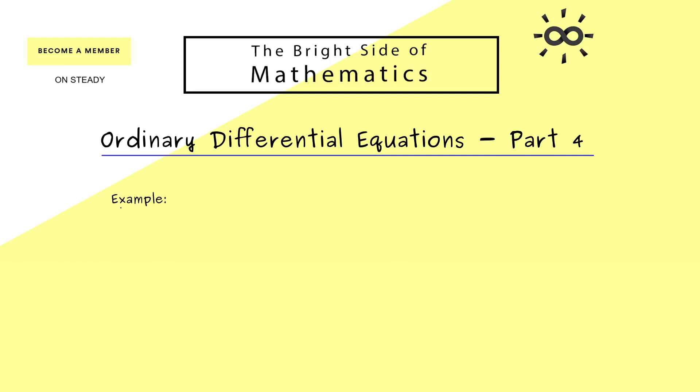Okay then let's start with the topic of today by looking at an example. We choose that the highest derivative we have is the third derivative. And then this should be equal to the cosine of the second derivative, plus first derivative squared plus x.